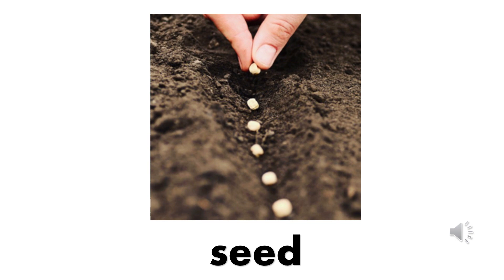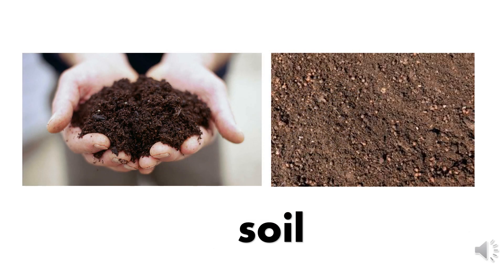Now I am going to go over some words you may or may not know already. What do you see in the picture? Did you say seeds? You're right! Seeds are the small parts made by plants from which new plants grow. What do you see in this picture? Did you say soil? You're right! Soil is the upper layer of the earth's surface where plants grow.